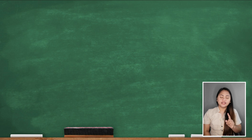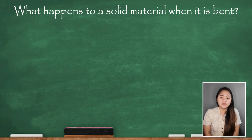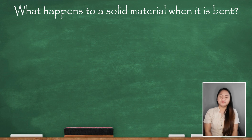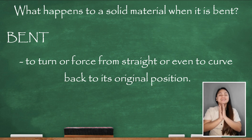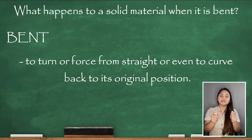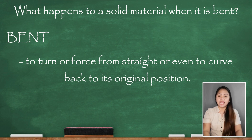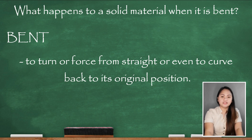First, what happens to solid materials when they are bent? Bent means to turn or force something from straight or even to a curve, and it can return back to the original position. In Tagalog, bent means binabaloktot — when we bend an object, we can return it to its original position. This is an example of bending.